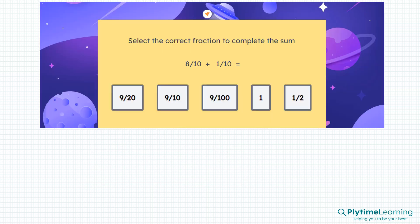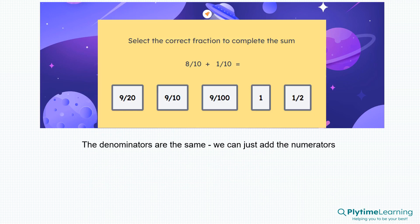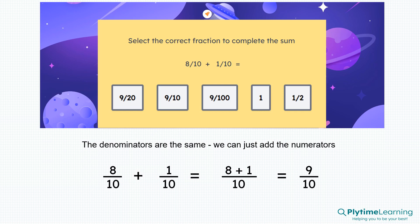What about this question? What's the correct fraction to complete the sum? Eight tenths plus one tenth — the denominators are the same, so we can just add the numerators. It's the same as eight plus one over ten. Eight plus one equals nine, so it's the same as nine tenths. Here's the correct answer.